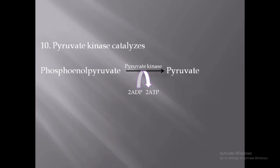The final step is the conversion of phosphoenolpyruvate to pyruvate with the help of the enzyme pyruvate kinase. In this reaction, 2 ADP molecules are converted to 2 ATP molecules.